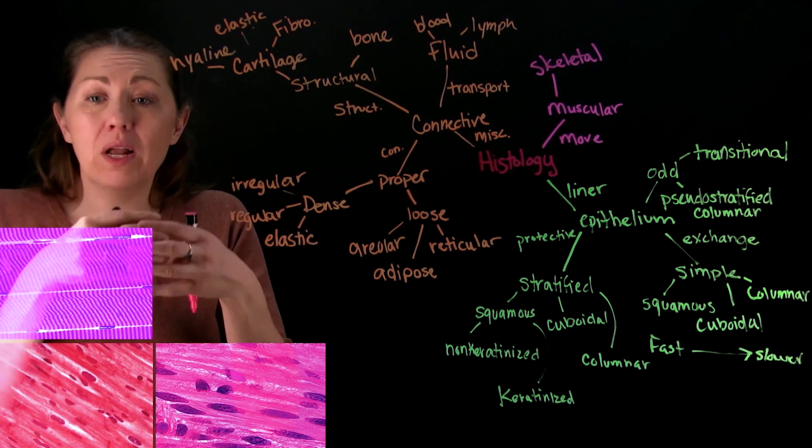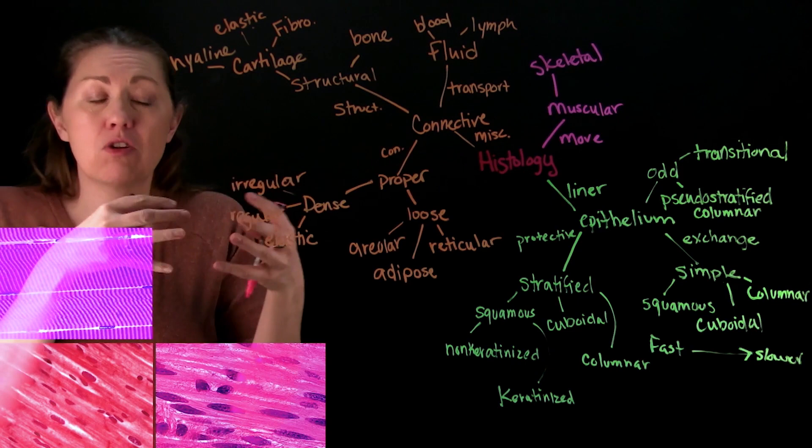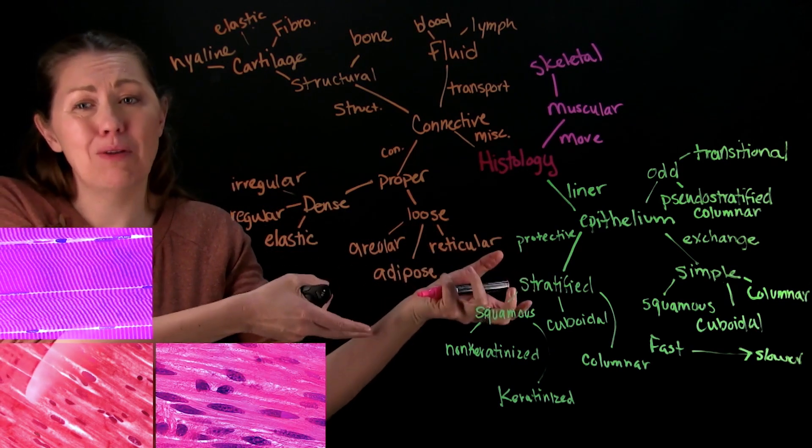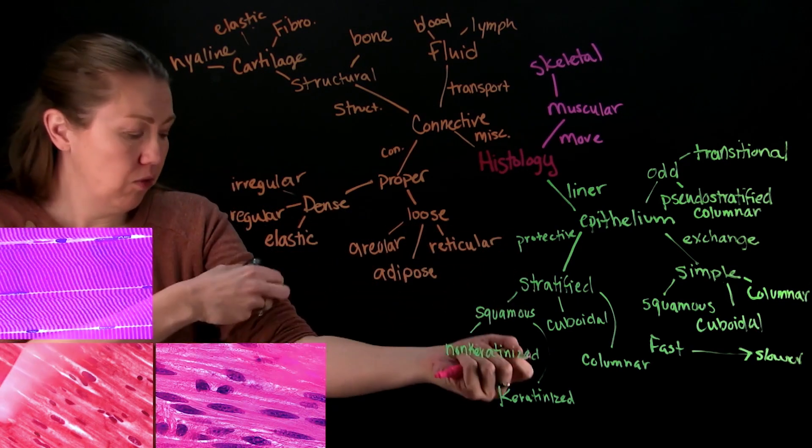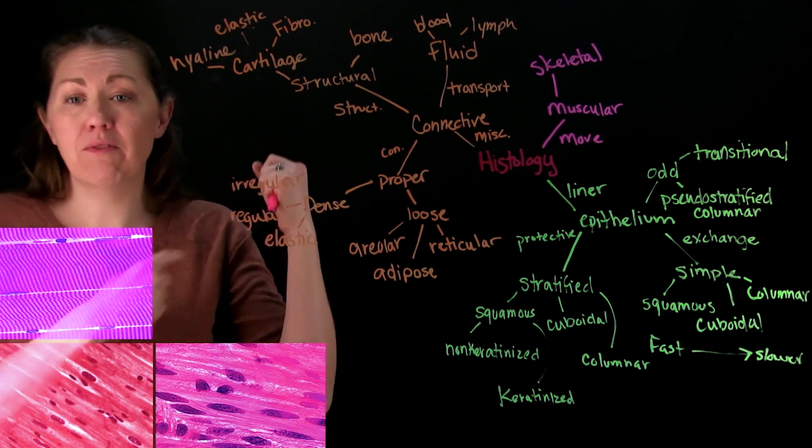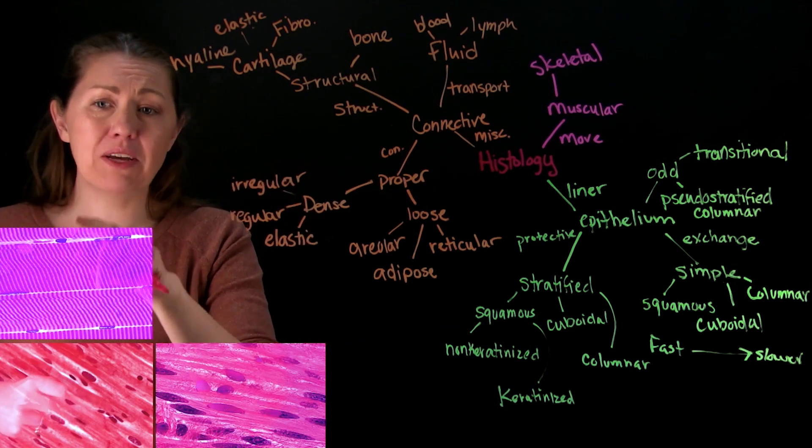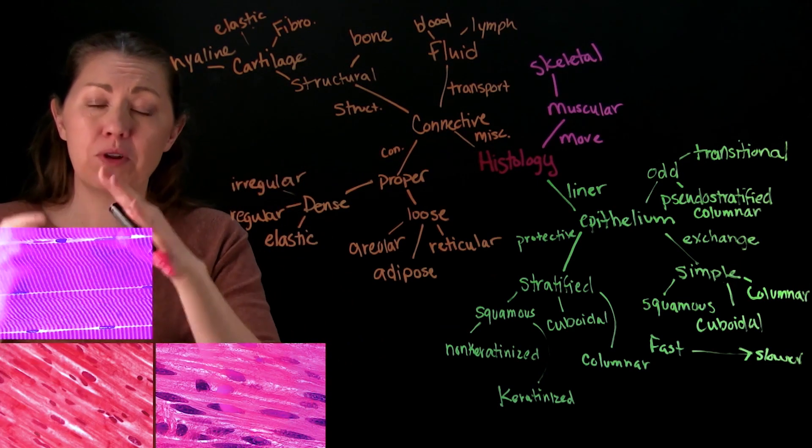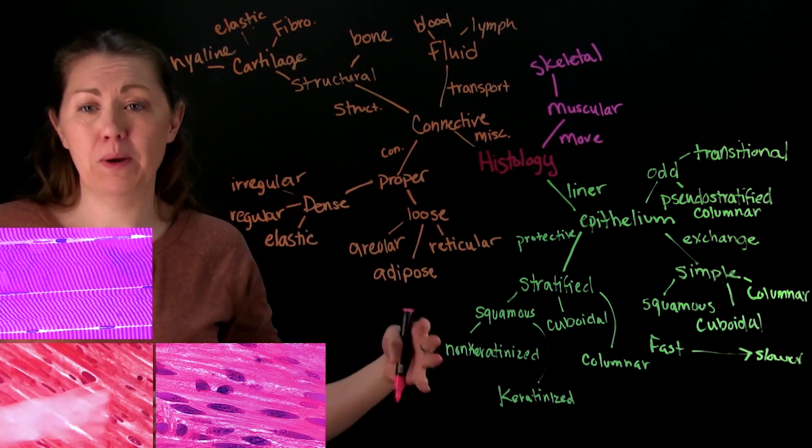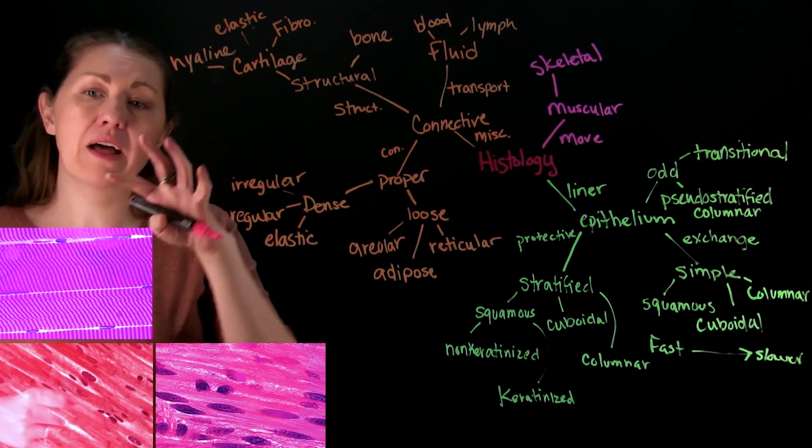So the striations are there because you have proteins that are going to pull on each other and slide over each other to make these contractions. Because basically how muscles work is they pull, they're like ropes. And so this muscle is going to pull to like lift that forearm. And so what you have here are just the two different types of proteins organized in a way that they just repeat all the way down. So we have thick and then thin filaments which we'll learn more about in muscles.